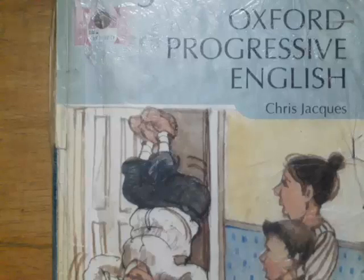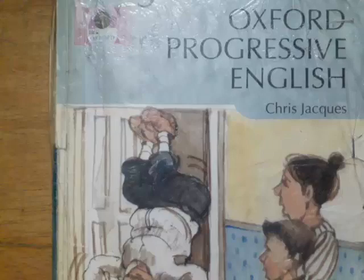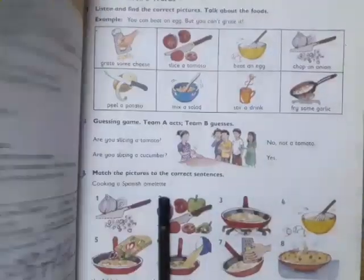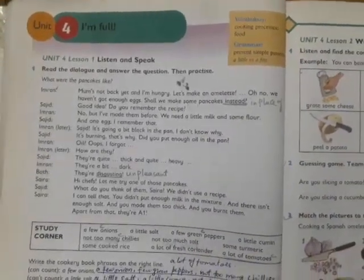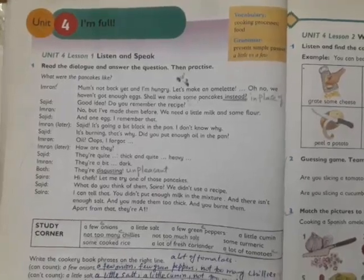Assalamu alaikum students, now we are going to start unit 4 of Oxford Progressive class 5. Open your books at page 20. The name of the unit is 'I'm Full' and it is a dialogue between two boys, Imran and Sajid.